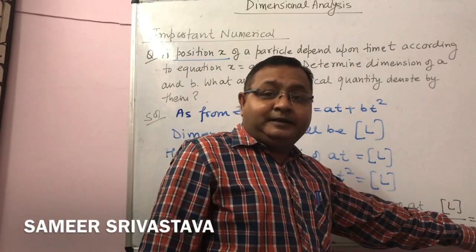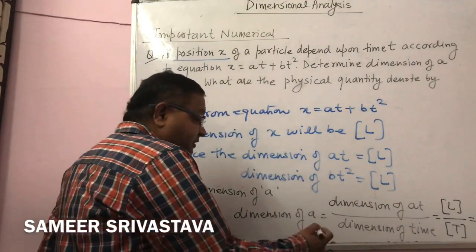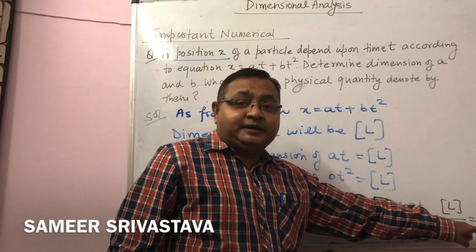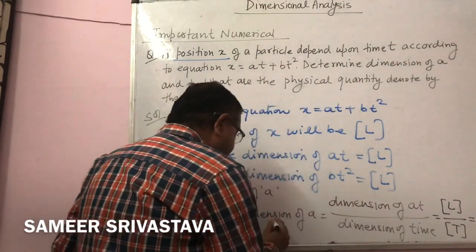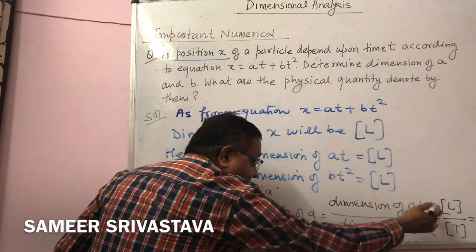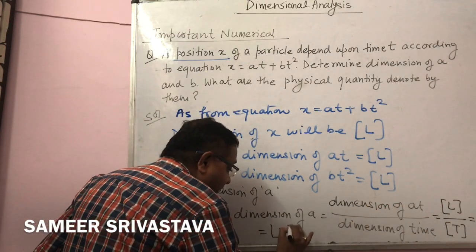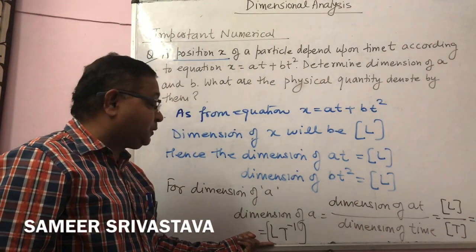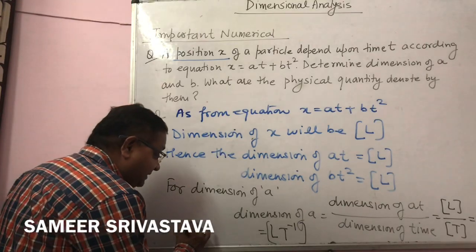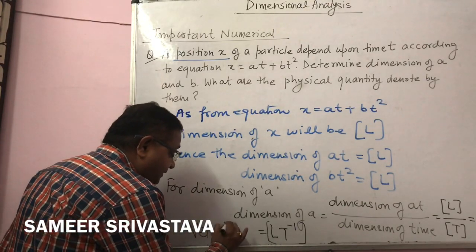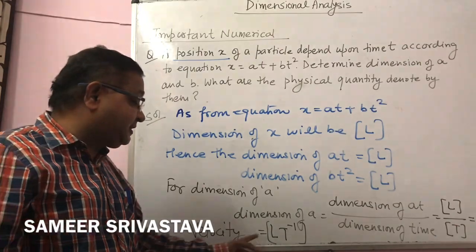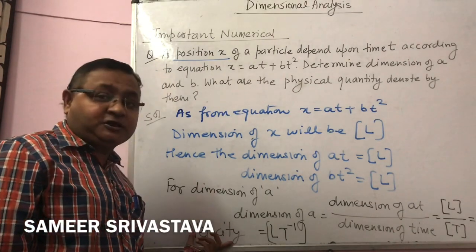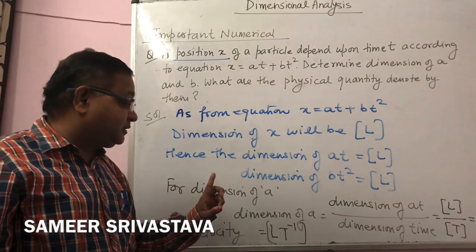The dimension of a is LT⁻¹. The physical quantity represented by this is velocity, because the formula of velocity is length upon time or distance upon time. So, the physical quantity is velocity and the dimension of a is LT⁻¹.